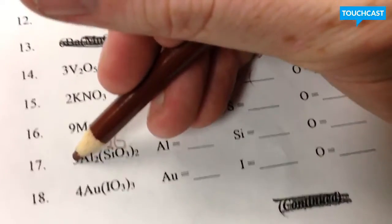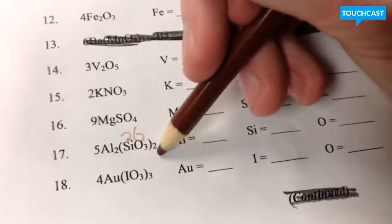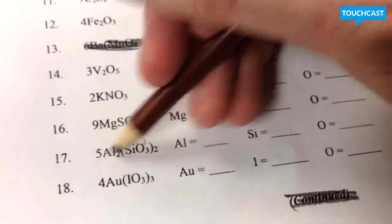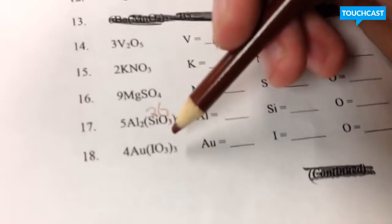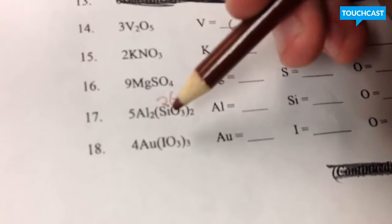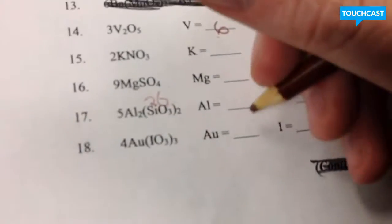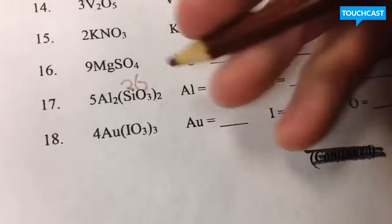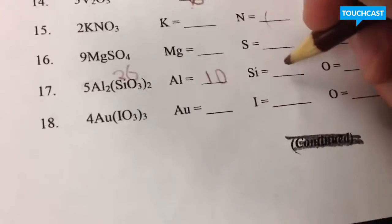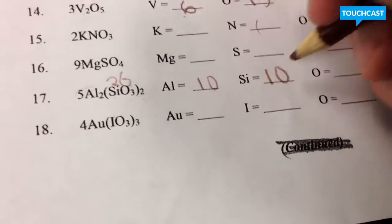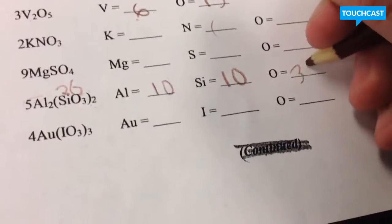Now, if you look over here, this means you have six oxygens in every molecule of this entire compound. You have two silicons in every molecule. Now, if you look here, you basically have five of these molecules. So you would have five times two, giving you ten aluminums. You would have five times two up here, because remember, you have two of these silicons, which would give you ten silicons. And then over here, you'd have five times six, giving you thirty total oxygens.